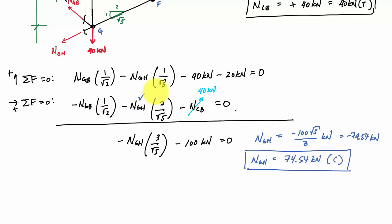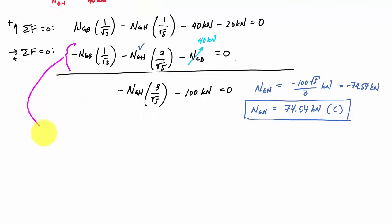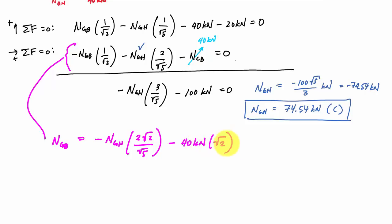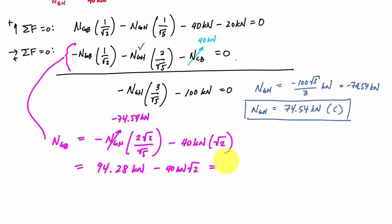Now I know NGH, so I can substitute back to solve for NGB. From the horizontal equilibrium equation: NGB equals negative NGH times 2 times √2 over √5 minus 40 kilonewtons times √2. Substituting NGH equal to negative 74.54 kilonewtons gives a positive result: 94.28 minus 40√2 kilonewtons, which equals approximately 37.71 kilonewtons. So NGB is 37.71 kilonewtons in tension.